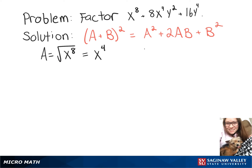We'll do the same thing with the B term, so we'll take the square root of 16y to the 4th. And that'll give us 4y squared.